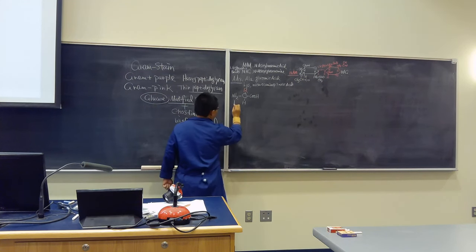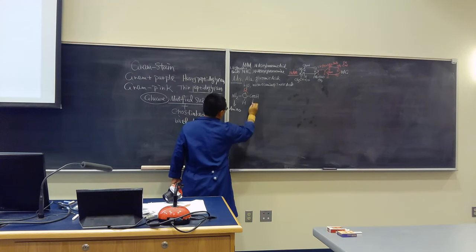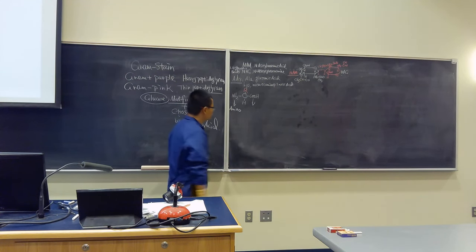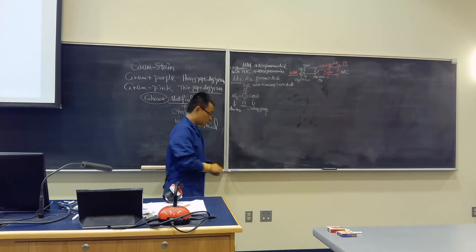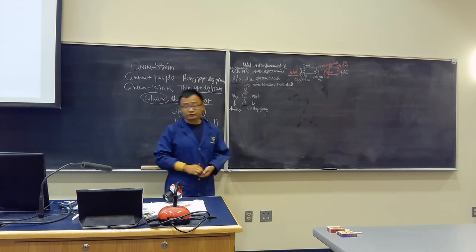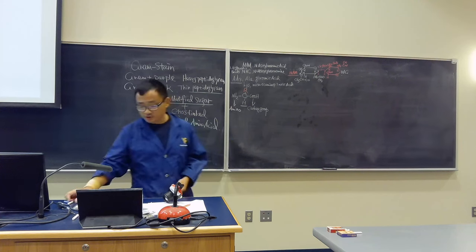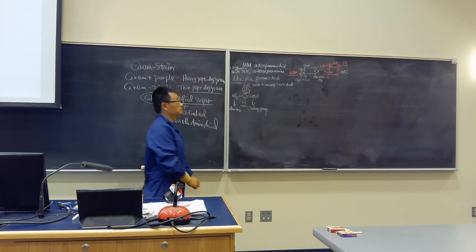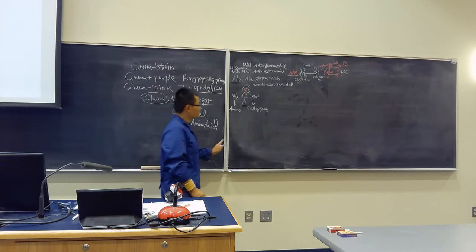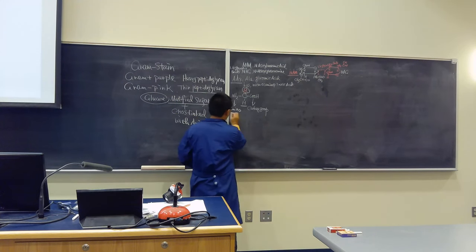What is NH2? Amino group. What is COOH? Carboxyl group. This is a proton, H, at C-1. The major difference among amino acids is the side chain R. That's the key. You need to know the basic structure of amino acids.